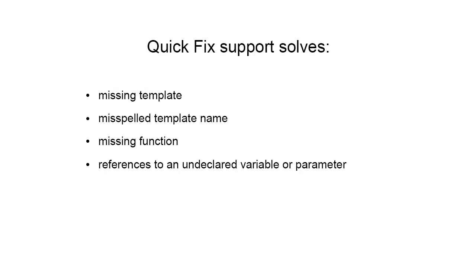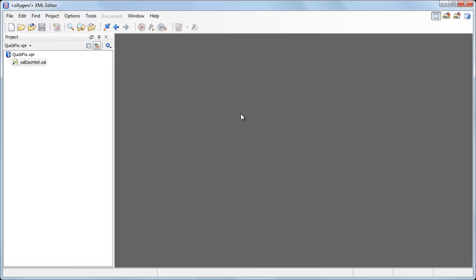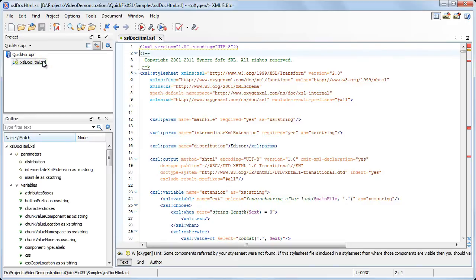Oxygen improves the way you edit XSLT stylesheets by offering fixes for errors that appear during XSLT development. Using the Quick Fix support, you can resolve problems like missing template, misspelled template name, missing function, or reference to an undeclared variable or parameter. In our demonstration, we'll use an XSLT file that contains several types of errors for each of which Oxygen offers quick fixes.